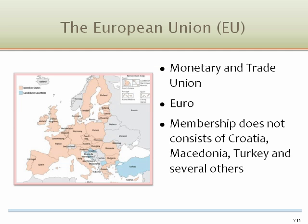The European Union is an economic and monetary union that currently contains 25 countries. The European Union represents a significant restructuring of the global marketplace. By dramatically lowering trade barriers between member nations within the Union, the complexion of the global marketplace has changed.